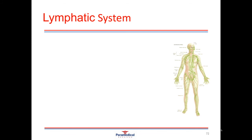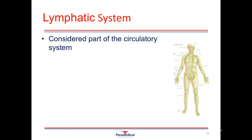The lymphatic system is the last system we're going to have a look at. It's also called the drainage system of the body. It's considered to be part of the circulatory system, and as you can see from the diagram, it kind of mimics the circulatory system with its vessels extending all the way from the tissues to the core of the body.